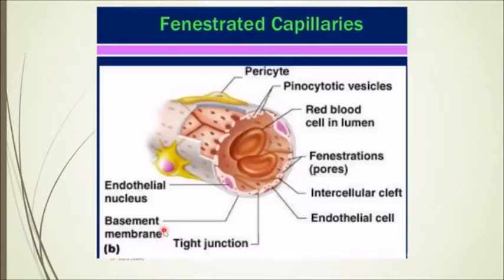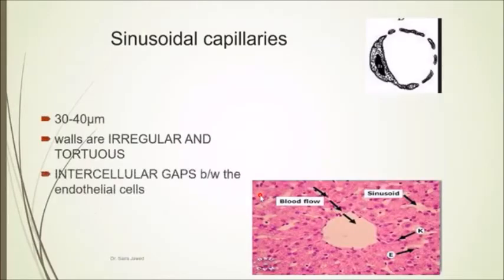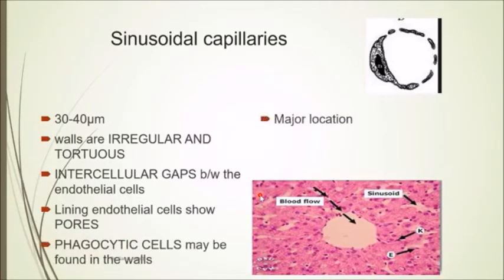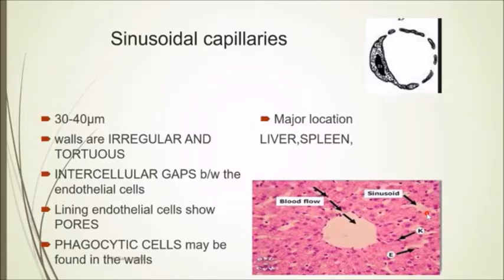From the intestines, nutrients travel to different parts of the body, so the intestines need fenestrated capillaries, along with the endocrine glands and the kidneys. You can see that there are fenestra or small openings in these capillaries, although the cells are tightly packed together. Sinusoidal capillaries are dilated, present in the liver and spleen, with large, irregular, and tortuous walls.